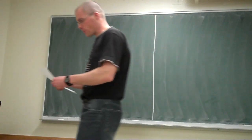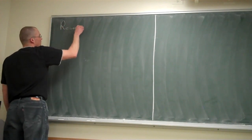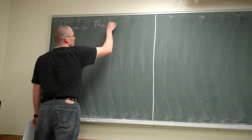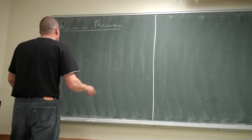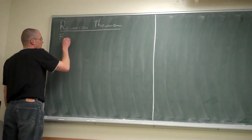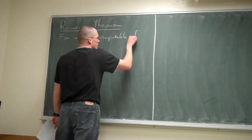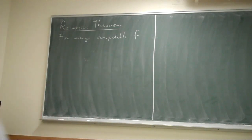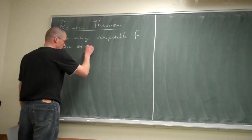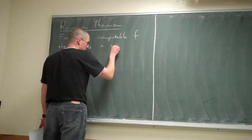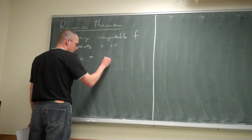We are going to talk today about the recursion theorem. What the recursion theorem says is: for every computable f, for every computable function, there exists a natural number n such that n is equal to f of n.